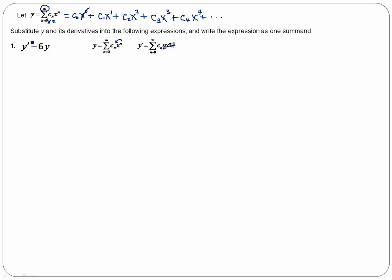So I'm going to substitute this into my two terms. Notice that this is my y prime minus 6y. There's my y prime, and here's my y, and I've substituted into this expression. And now what I want to do is I want to combine these two summations into a single summation.